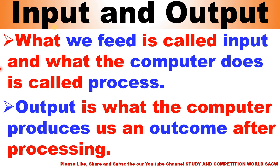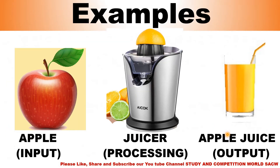What we feed is called input, what the computer does is called process, and what the computer produces as an outcome after processing is called output. For example: this is an apple — apple is input. This is a juicer — juicer is processing, where juice is made. And the final result we get is apple juice — that is the output.